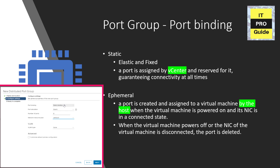You can connect a virtual machine to a static binding port group only through vCenter Server. That is the key difference when it comes to ephemeral binding. In ephemeral binding, when you configure a port group with ephemeral binding, a port is created and assigned to the virtual machine by the host — not by vCenter.